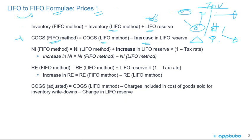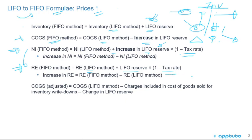Since cost of goods sold is less under FIFO, net income is going to be higher. Net income under FIFO equals net income under LIFO plus the increase in the reserve, times one minus the tax rate — because net income is after tax. Our retained earnings are also going to be higher: retained earnings under LIFO plus the entire LIFO reserve (not just the change) times one minus the tax rate.